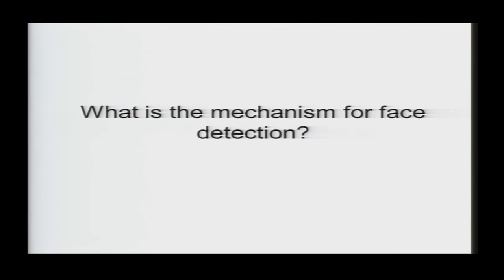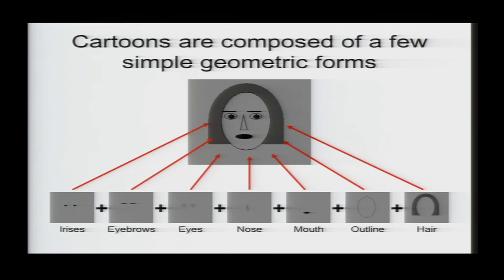So, what is the mechanism for generating these face-selective responses? To get at this, we took advantage of cartoon faces because they can be easily parametrized into their different parts, and we used this cartoon face composed of these seven different parts: irises, eyebrows, eyes, nose, mouth, outline, and hair.